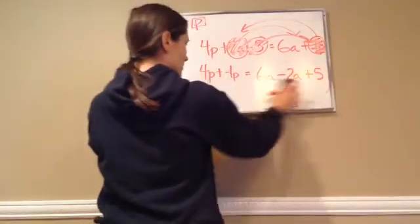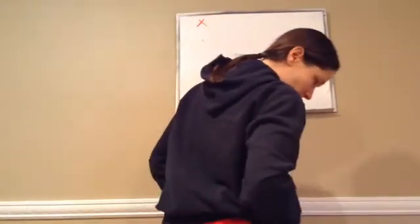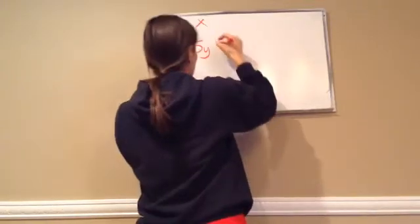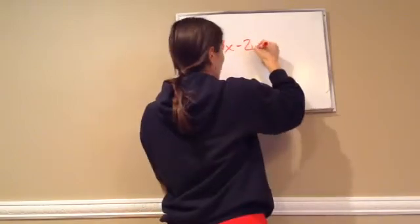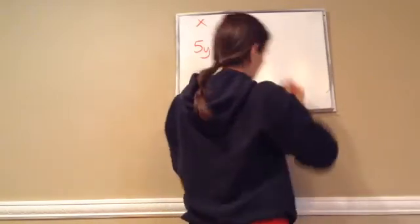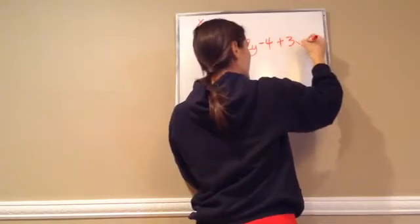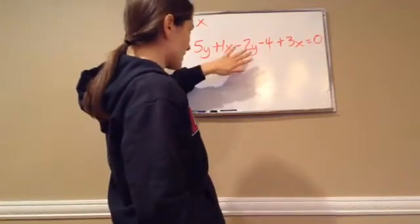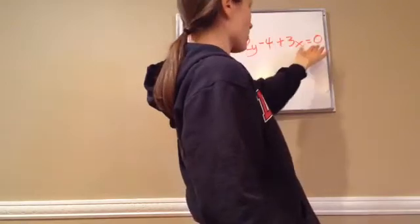Alright, let's do another one. This one says solve for x: 5y plus x, I'm going to put a 1x just to help us, minus 2y minus 4 plus 3x equals 0. Now this is not to confuse you because you still want to get the x's on one side and everything else goes over there. And this 0 is just worth nothing.